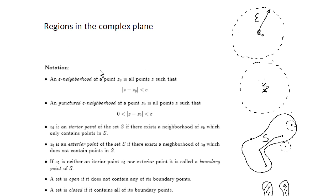A punctured epsilon neighborhood of a point z0 is all the point sets which satisfies this inequality. This means exactly as above, the set of points inside some circle with center at z0 and radius equal to epsilon. But in this case we exclude the point z0 from this set. So that's the reason why it's called punctured.